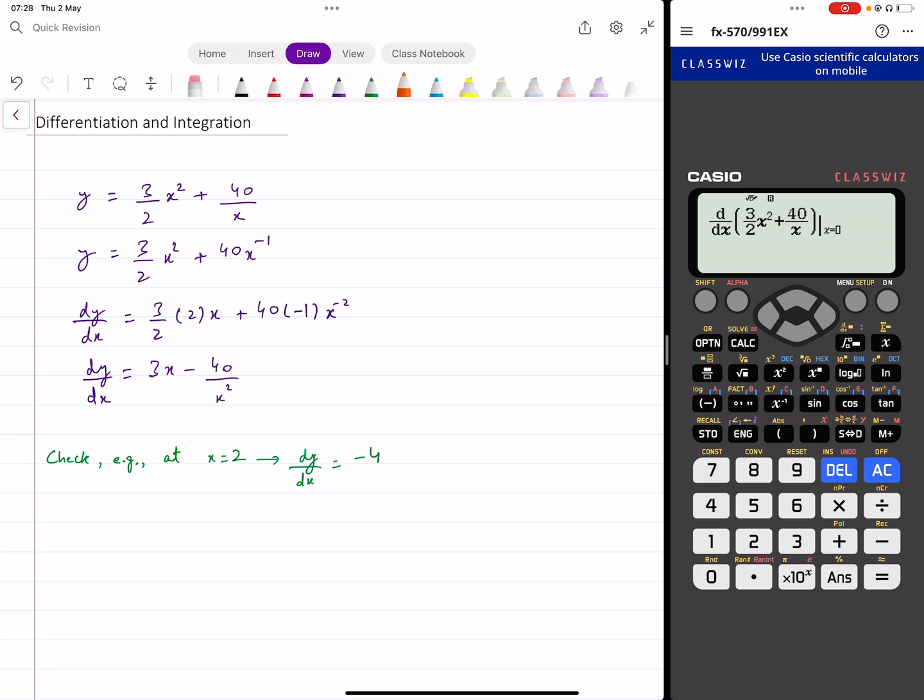So your calculator is not going to be able to give you an answer in terms of x. At least the calculators that can give you answers in terms of x they are not allowed. You're only allowed calculators that can give you some value of the derivative at a particular value of x. So how you can verify your answers is you can put some value of x in this derivative and put that same value in your calculator. For example if I put x equal to 2 in this derivative here I get minus 4.